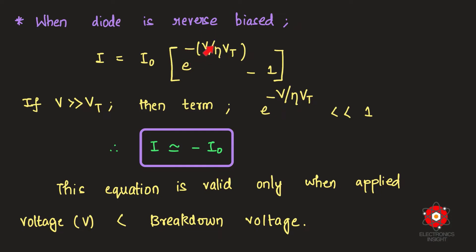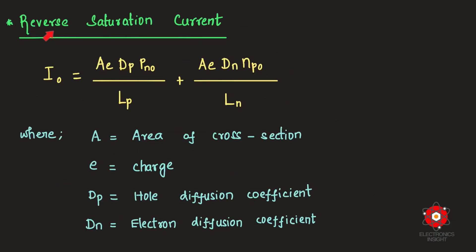When the diode is reverse biased, a negative external voltage is applied to the P-type semiconductor. The equation becomes exp(−V / η·Vt). If the applied voltage magnitude is much greater than the thermal voltage, the exponential term becomes negligible and the total diode current in reverse approaches −I₀, the reverse saturation current. This is valid only when the applied voltage is below the breakdown voltage, beyond which avalanche or Zener breakdown occurs.